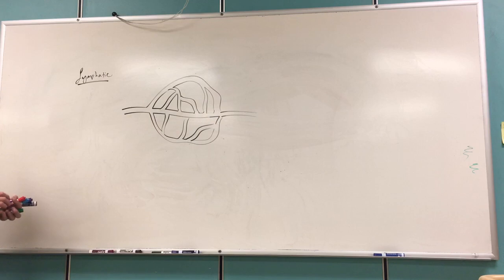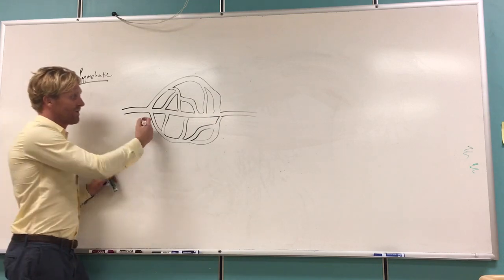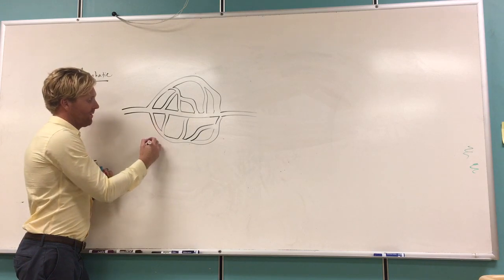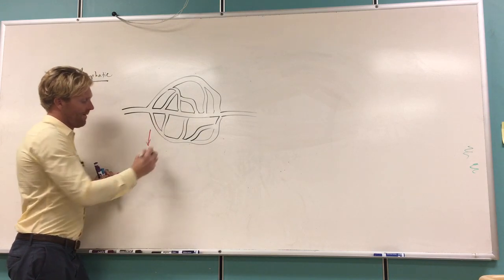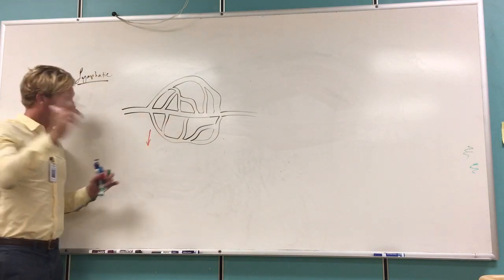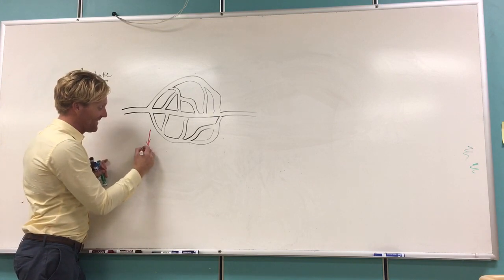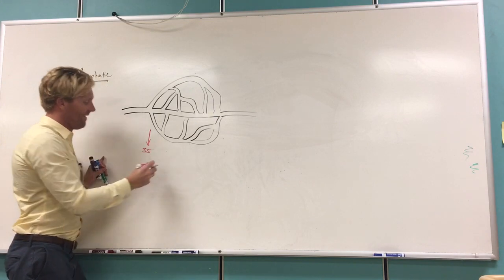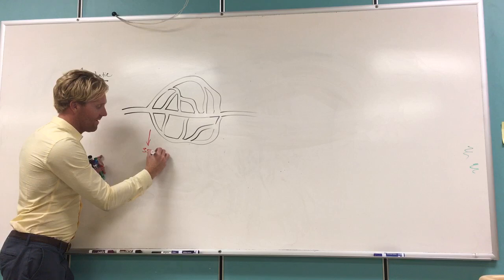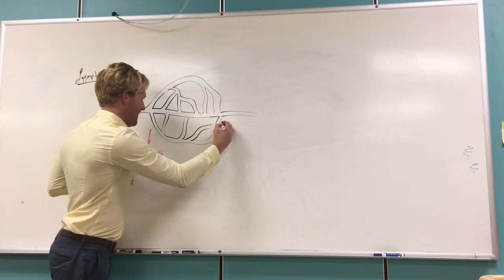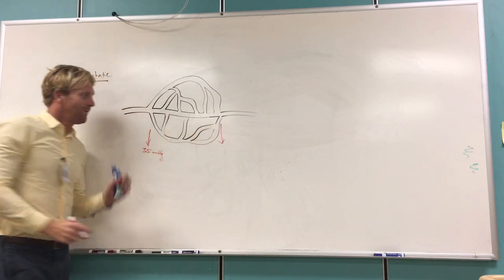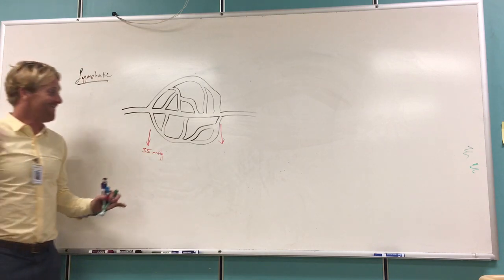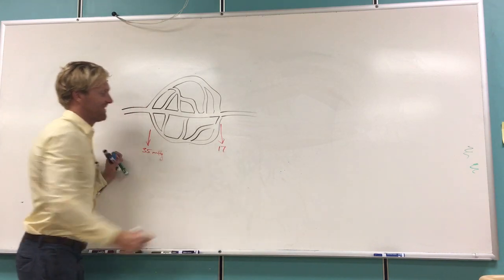So if we remember, what is the magnitude of blood pressure at the start of the capillary bed? 35. 35, that's right. So you got 35 millimeters of mercury going out here, and it goes down by the end of the capillary bed. What is it there? 17. 17, you've got it, Cam.